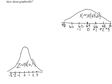62 would be 1 standard deviation below the mean, 60 is 2 standard deviations below and 58 is 3.